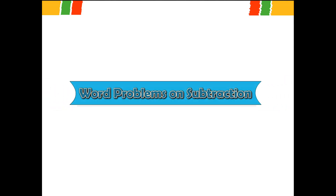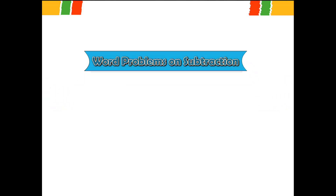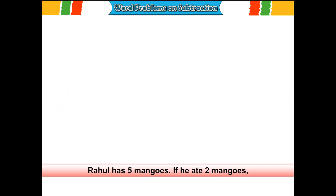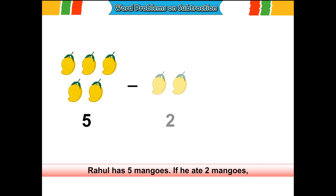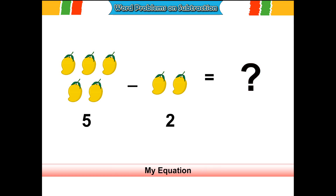Word problems on subtraction. Rahul has 5 mangoes. If he ate 2 mangoes, how many mangoes are left? My equation: 5 mangoes minus 2 mangoes is equal to 3 mangoes.